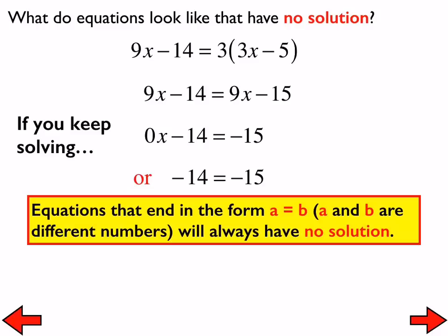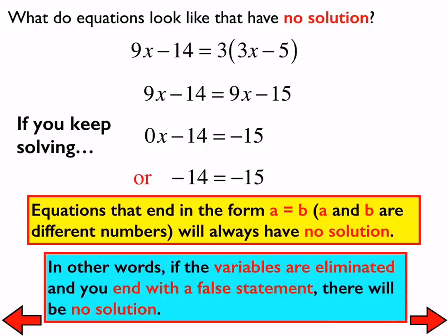To summarize: if the variables are eliminated, you will either have no solution or infinitely many solutions. Whether it's one or the other depends on whether you have a true or false statement. A true statement leads to infinitely many solutions; a false statement leads to no solution.